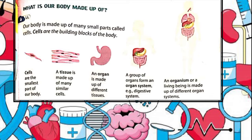Our two kidneys are also organs of our body, located in the back of the abdomen on either side of the body. Their function is to filter blood and form urine, which is excreted from the body.